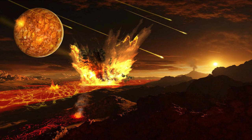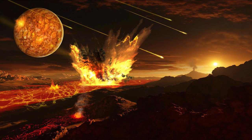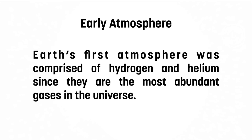Evidence of a solid crust dates back about 4.2 billion years ago, and conditions were still pretty harsh — Earth was not stable for life yet. Gases from inside the Earth seeped out of the crust through cracks or through volcanic eruptions. We call this process outgassing, and it's important because this is what created our first atmosphere. Earth's first atmosphere was composed of hydrogen and helium, because those were the two most abundant gases in the universe.